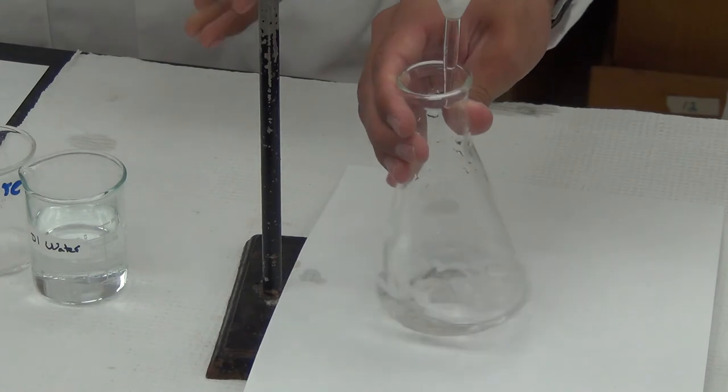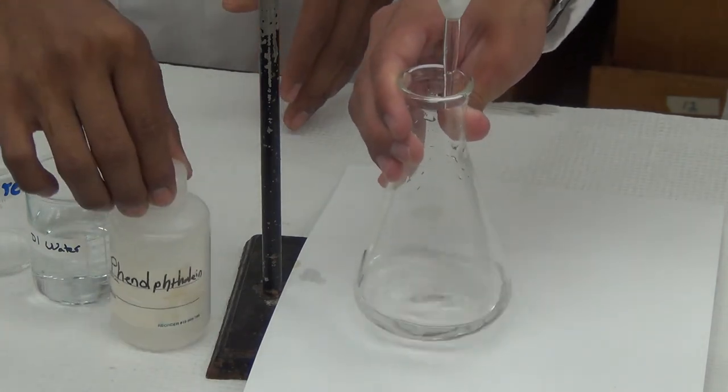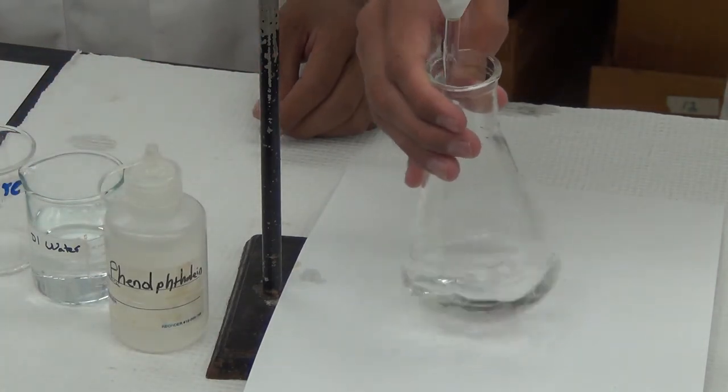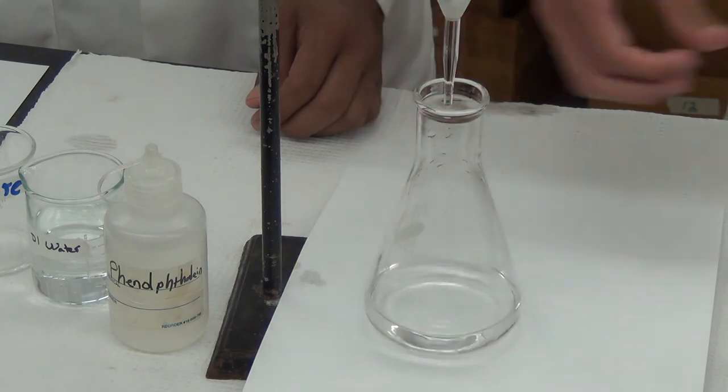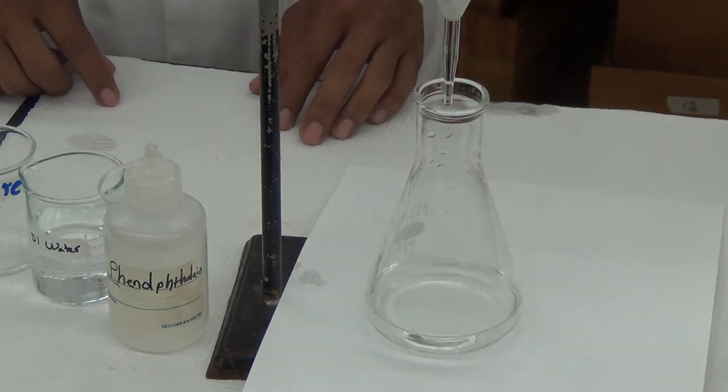We will be finding the volume of titrant it takes to neutralize the acid in the vinegar. The phenolphthalein is an indicator. It will show us when we've reached the endpoint of the titration by changing color.